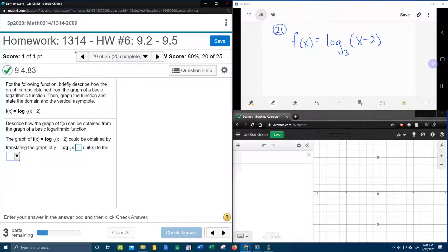Alright here we go, question number 20 of our college algebra homework number 6 in MyLabMath. They give us a function log base 3 of x minus 2, and the first thing they want us to do is describe the transformations that are involved in this function.